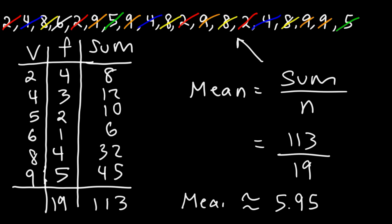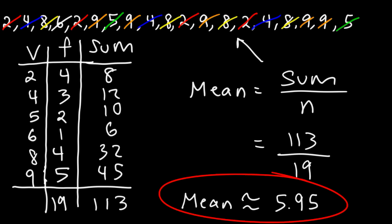So that is the mean for this data set. That's basically it for this video. Now you know how to create a frequency table and how to calculate the mean, median, mode, and range using that frequency table. Thanks for watching.